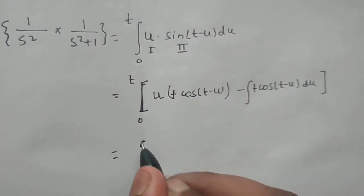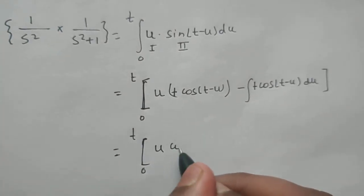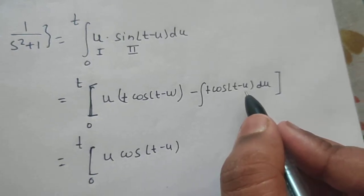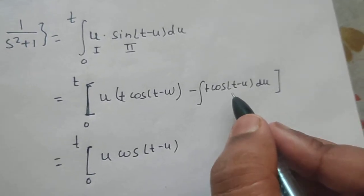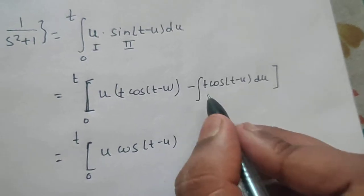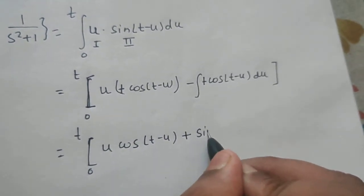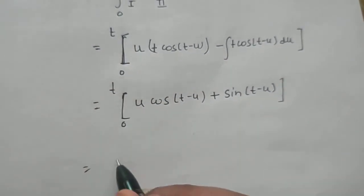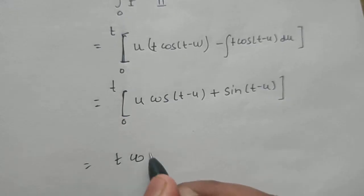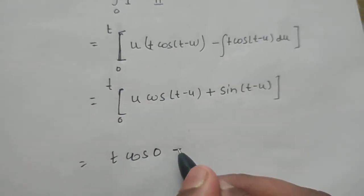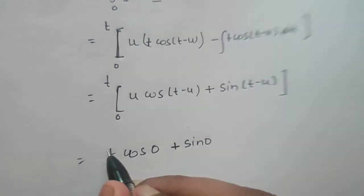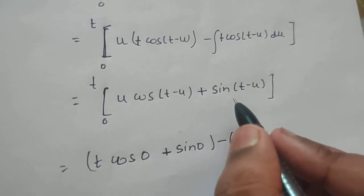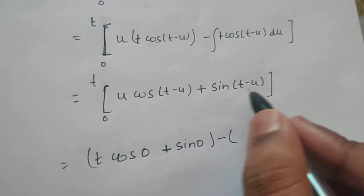This gives us [u·cos(t minus u) + sin(t minus u)] evaluated from 0 to t. At the upper limit t: t·cos(0) + sin(0) = t·1 + 0 = t. At the lower limit 0: 0·cos(t) + sin(t) = sin(t).